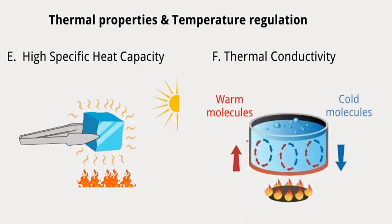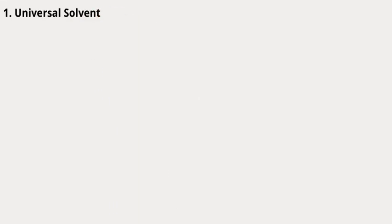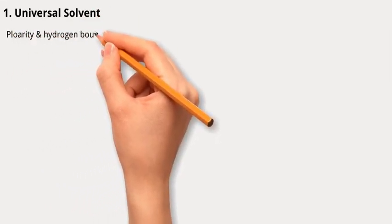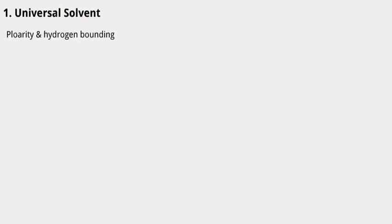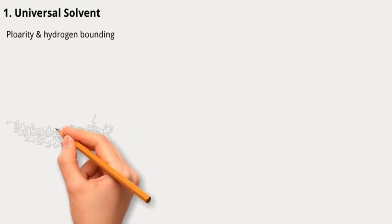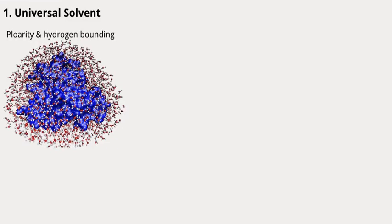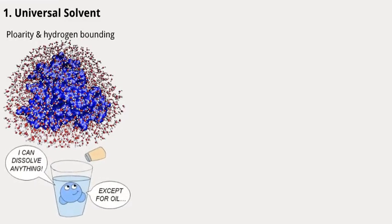Now let us discover how these properties function together in the biological system in cells. One, universal solvent. Because of its polarity and ability to form an extensive number of hydrogen bonds, water is an excellent solvent for a wide range of substances such as proteins, nucleic acids, ions, and carbohydrates.